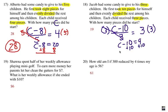Alright, fairly simple, of course, after you saw the example from number 17. Hopefully, that makes sense to you. Okay, that's a two-step equation. Now, number 19. Shauna spent half of her weekly allowance playing mini golf. To earn more money, her parents let her clean the gutters for seven dollars. What is her weekly allowance if she ended with ten dollars?